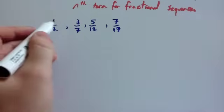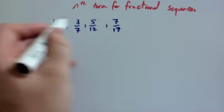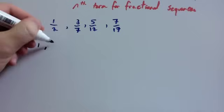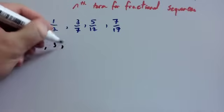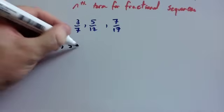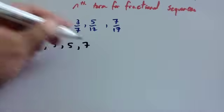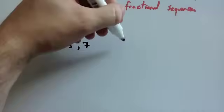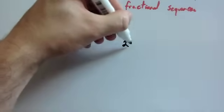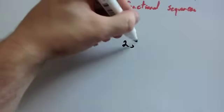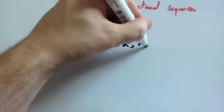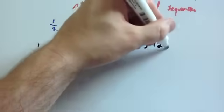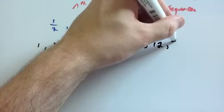So let's look at the numerators to start off with. The numerators are one, three, five, seven. And the denominators are two, seven, twelve, and seventeen.